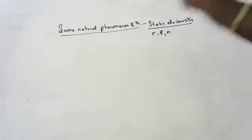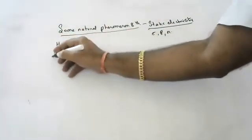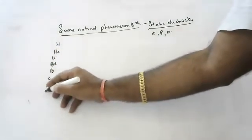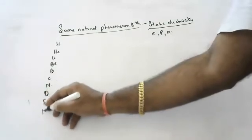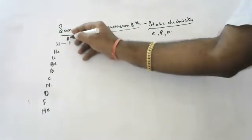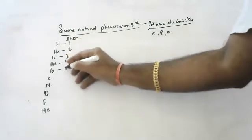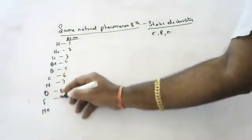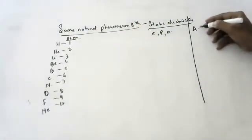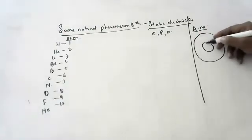First, I will name some elements: hydrogen, helium, lithium, beryllium, boron, carbon, nitrogen, oxygen, fluorine, neon. The atomic number of hydrogen is 1. Helium is 2, lithium is 3, beryllium is 4, boron is 5, carbon is 6, nitrogen is 7, oxygen is 8, fluorine is 9, neon is 10.